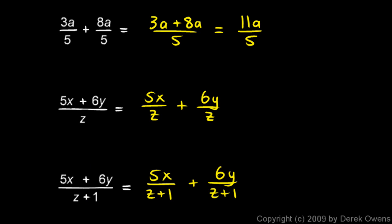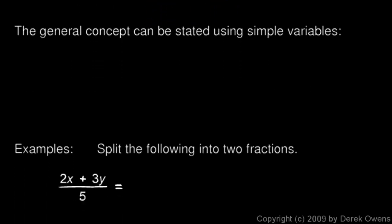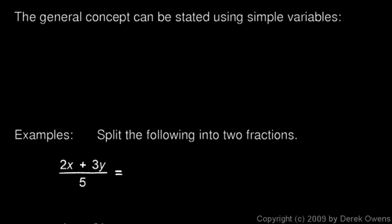The correct approach is to recognize that 5x plus 6y over this will be the same as 5x over this plus 6y over this. This general concept can be stated using variables. Write this in your notes: a plus b over c can be written as a over c plus b over c. That works as long as c is not 0.